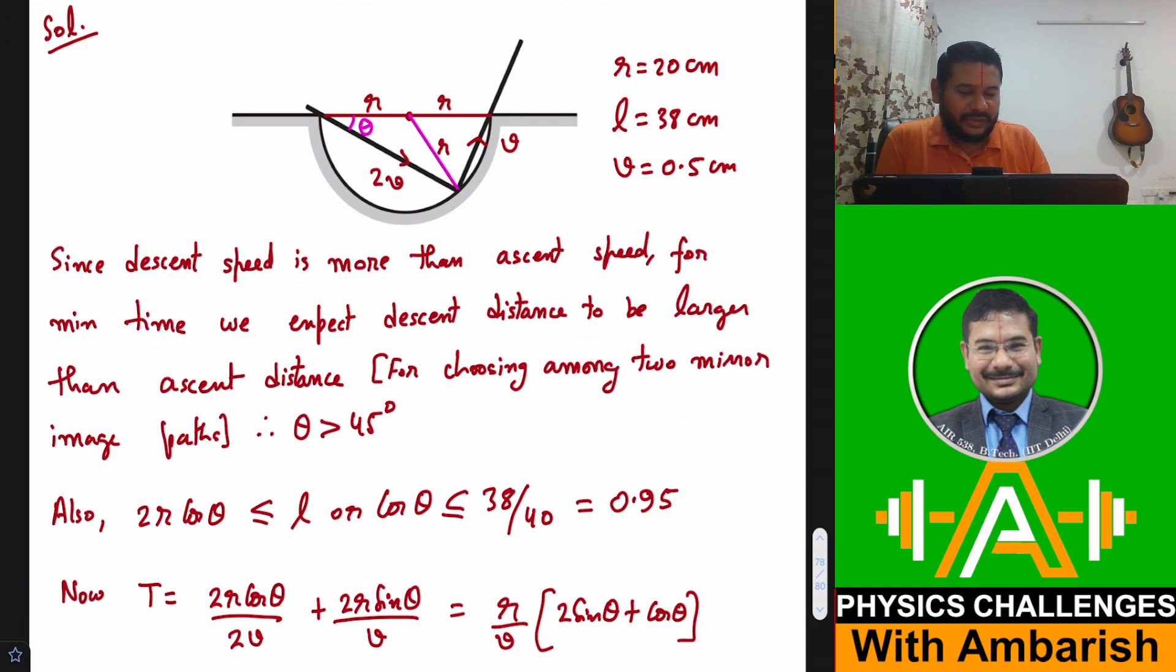That much we can say that cos θ must be less than 0.95. So far we have seen that theta will be definitely more than 45 degrees and cos theta will be definitely less than 0.95.